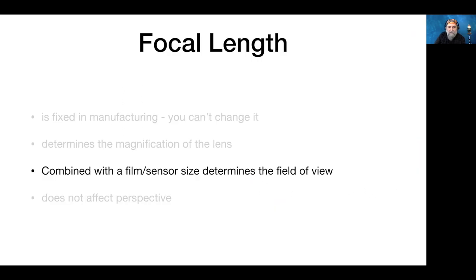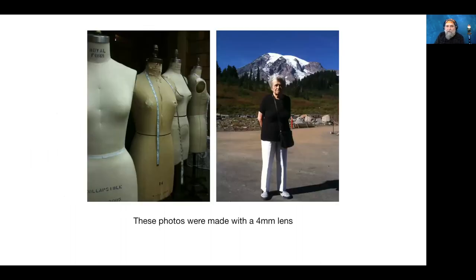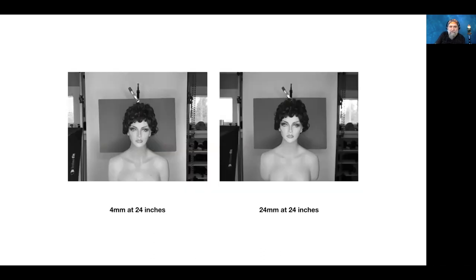Combined with the film or sensor size, focal length determines the field of view. Both of these photos were made with a 4mm lens — which sounds extremely wide for a 35mm camera, but these were taken with an iPhone. On the iPhone, 4mm is just a bit wider than a normal lens because of the small sensor size. The two photos are taken at 24 inches from the subject but with very different focal lengths — 4mm and 24mm — and they look similar because the sensor sizes are very different.